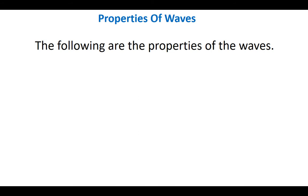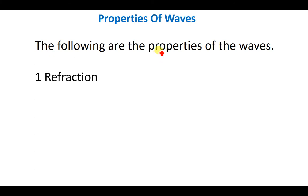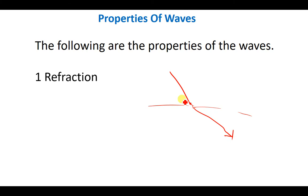Waves can undergo what is called refraction. Refraction is simply the bending of a wave when it passes through a certain medium. For instance, if a wave is coming from one side and meets a barrier or new medium, you discover that it changes direction — it bends. This is called refraction.